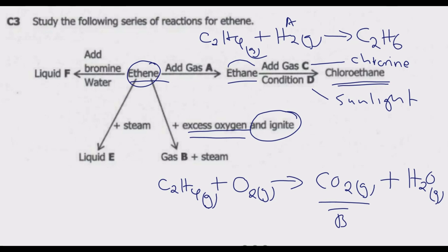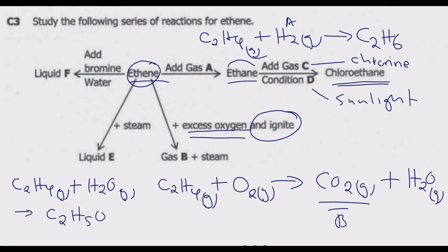Moving to liquid E: we are reacting ethene with steam to get liquid E. All alkenes react with steam in the presence of phosphoric acid as a catalyst to produce an alcohol. So the equation is: C₂H₄ (gas) + H₂O (steam), in the presence of phosphoric acid, gives us an alcohol. Therefore liquid E is ethanol.